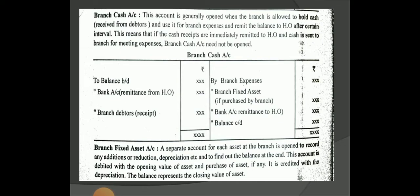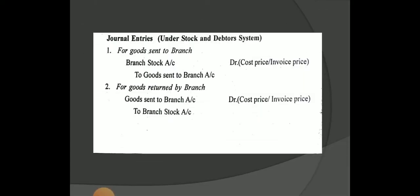The last account is the branch fixed asset account, which is maintained separately for each asset. It carries an opening balance. It is not a depreciation account by itself, but it is a branch fixed asset account. There are no goods sent to branch under this account.